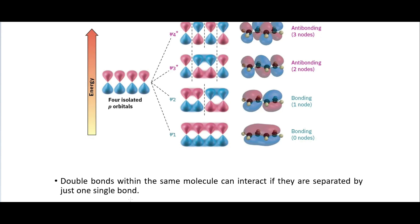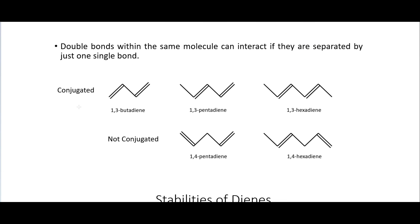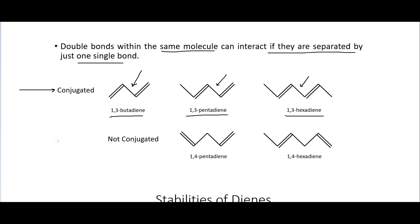The first thing we want to talk about when discussing conjugated systems is that we are talking about double bonds within the same molecule that can interact if they are separated by just one single bond. So here in this top row, we have conjugated systems: 1,3-butadiene, 1,3-pentadiene, or 1,3-hexadiene — each has just one single bond between each of the double bonds. Non-conjugated systems have more than one single bond between those double bonds. So conjugated systems have alternating double and single bonds, requiring at least two double bonds with only one single bond between them.